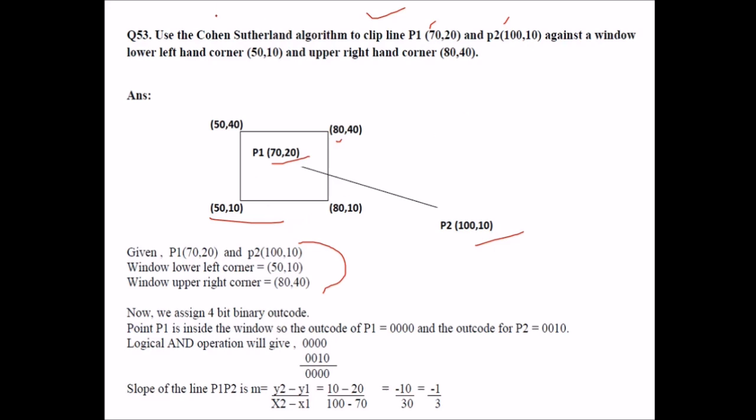So we have drawn it using what has been given in the example or the question. Now what we do in this particular algorithm, we assign a 4-bit binary output. Point P1 is inside the window, so the output is 0, 0, 0, 0, and the output of P2 is also 0, 0, 0, 0. So logical AND operation will give 0, 0, 0, 0.